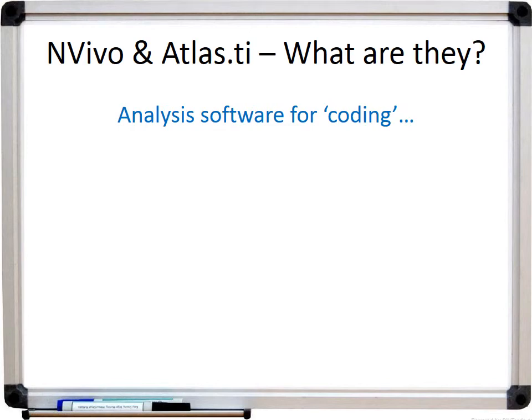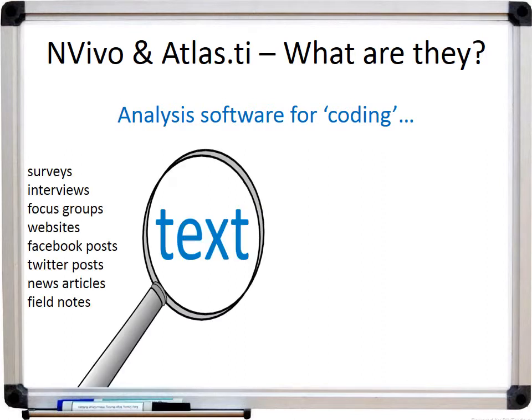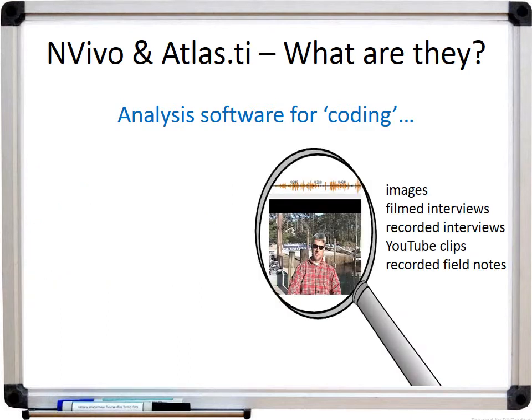NVivo and Atlas TI are analysis softwares for coding or tagging qualitative data with themes or codes. Qualitative researchers are often analyzing text resources, and these softwares can be used to analyze a wide variety of textual as well as audiovisual materials, so there is a wide variety of qualitative data sources that can be analyzed in the software.